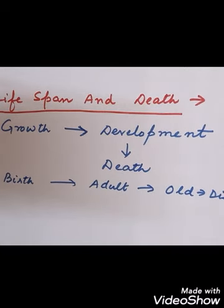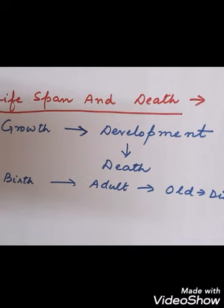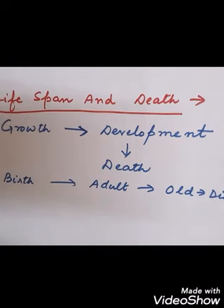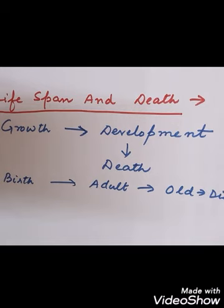For example, a hen lays eggs, from the eggs chicks are hatched, they develop into a hen, which again lays eggs — and this cycle continues. But each organism will also die — one hen will die, and another continues the process. Each and every living organism has a fixed lifespan, and after a certain time they will die. Death is inevitable for all — as there is life, there will be death, and this cycle of life and death goes on.